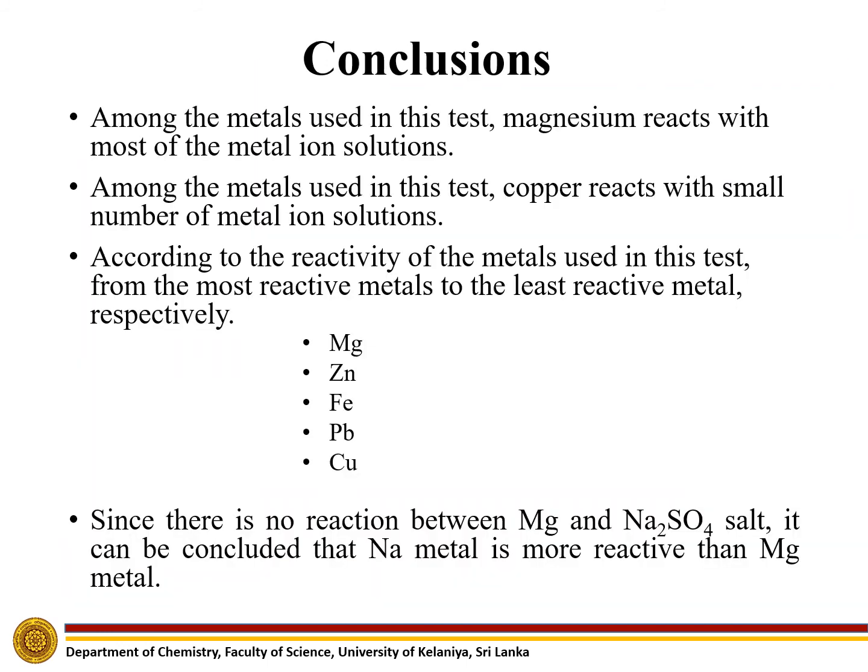Among the metals used in this test, magnesium reacts with most of the metal ion solutions, while copper reacts with the smallest number. According to the reactivity of the metals used, we can arrange them from most reactive to least reactive as: magnesium, zinc, iron, lead, and copper. Since there is no reaction between magnesium and sodium sulphate, it can be concluded that sodium metal is more reactive than magnesium metal.